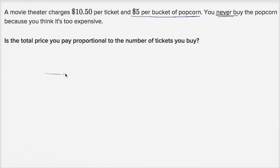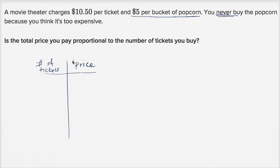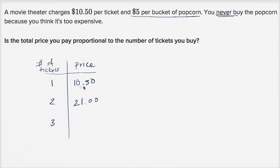Just to see that a little bit clearer, let's draw a little table here. Number of tickets and total price — we're assuming I never buy the popcorn. So if I buy one ticket, the price is gonna be $10.50. If I buy two tickets, it's gonna be two times $10.50, or $21. If I buy three tickets, it's gonna be three times $10.50, which is $31.50.